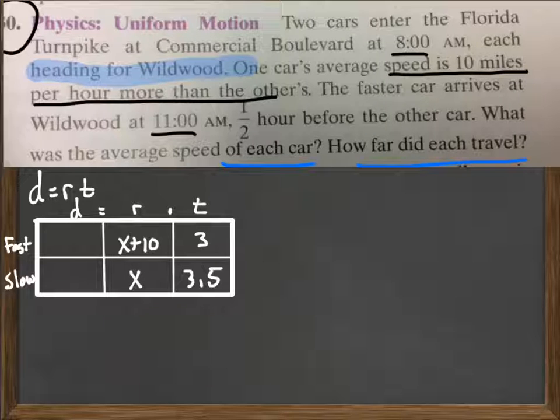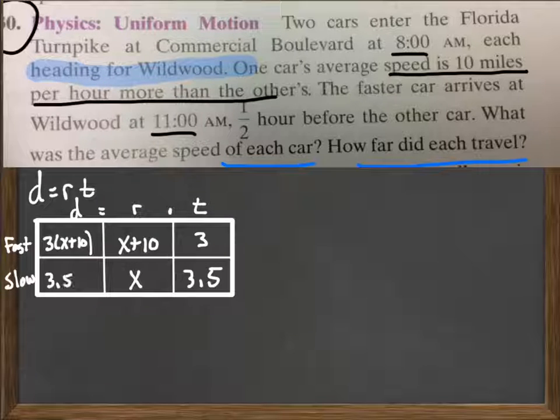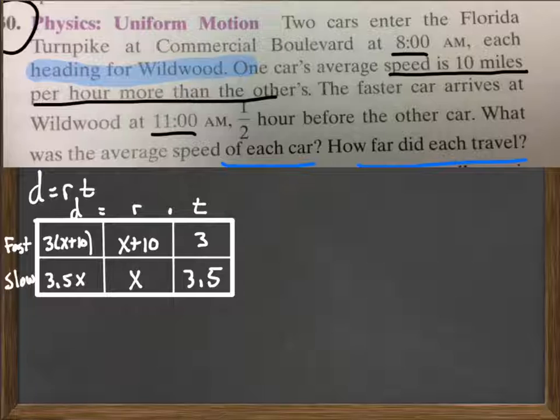So what we can do now is use our distance rate and time formula to solve for anything we don't know, which we don't have an expression for distance. They don't tell us how far it is from Commercial Boulevard to Wildwood. We don't know. Is it 50 miles? Is it 100 miles? 300 miles? But we can come up with expressions using distance equals rate times time. So multiply the rate x plus 10 times 3 gives us a distance of 3 times x plus 10 for the fast car and a distance of 3.5 times x for the slow car.